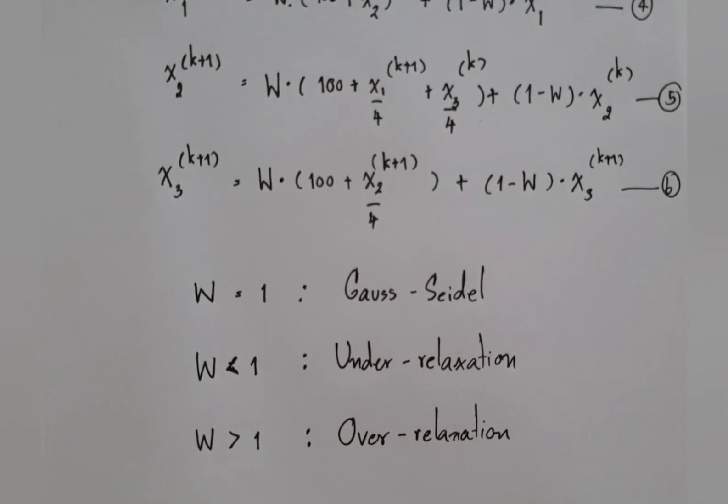In general, when we apply this technique to solve a system of equations, normally successive over-relaxation works faster than Gauss-Seidel, and Gauss-Seidel is also faster than Jacobi.